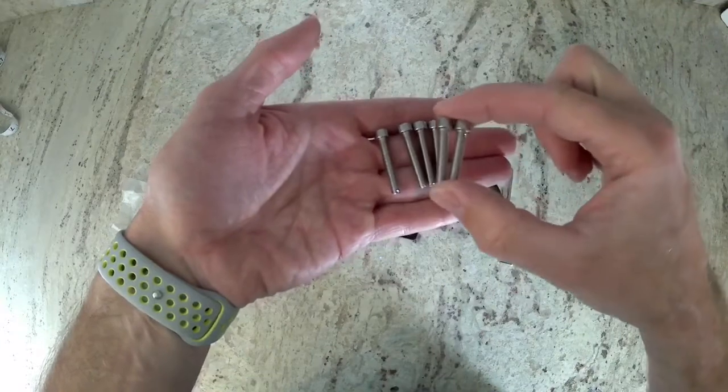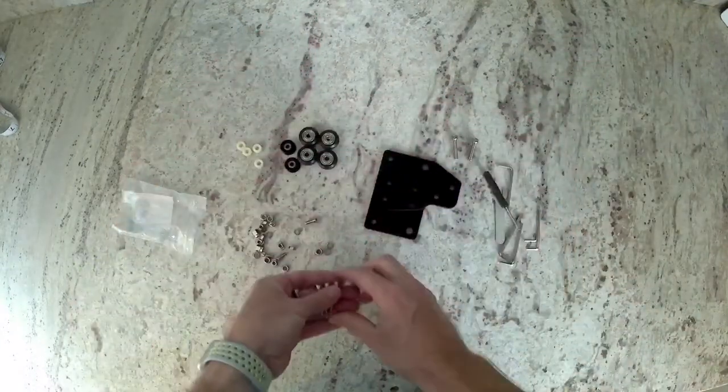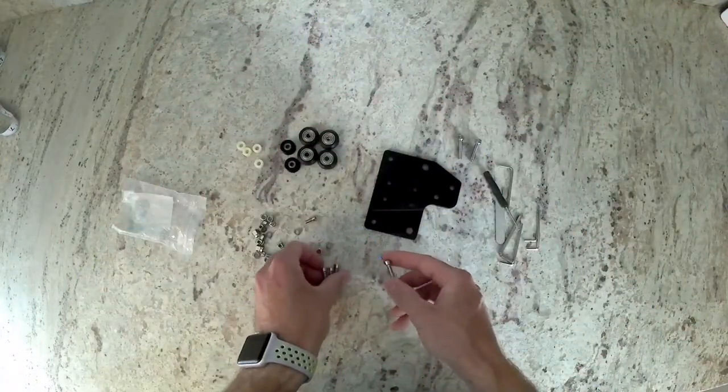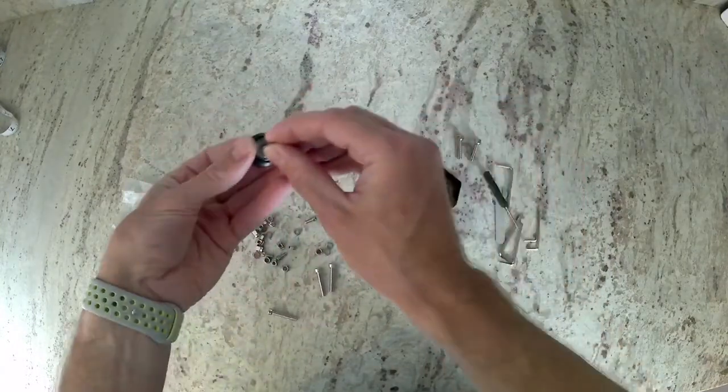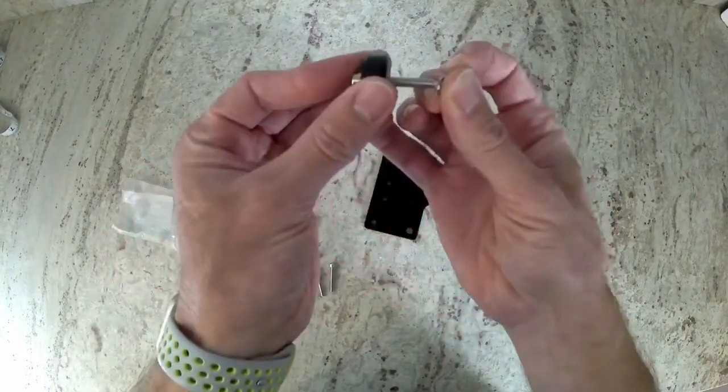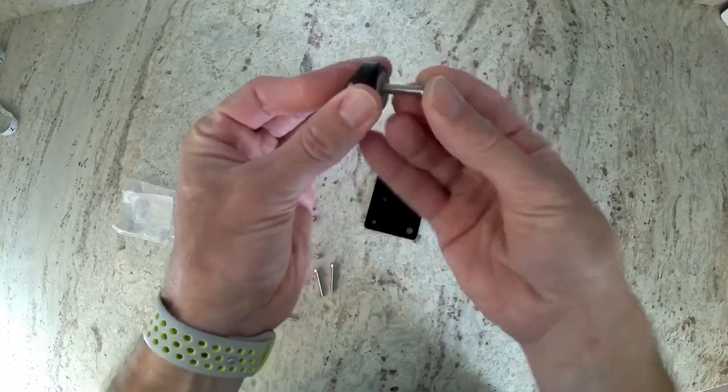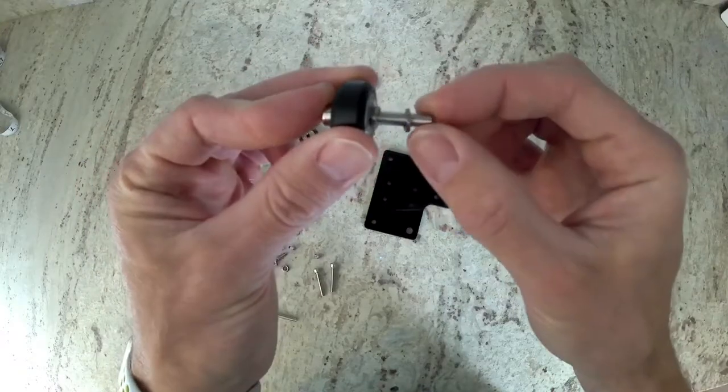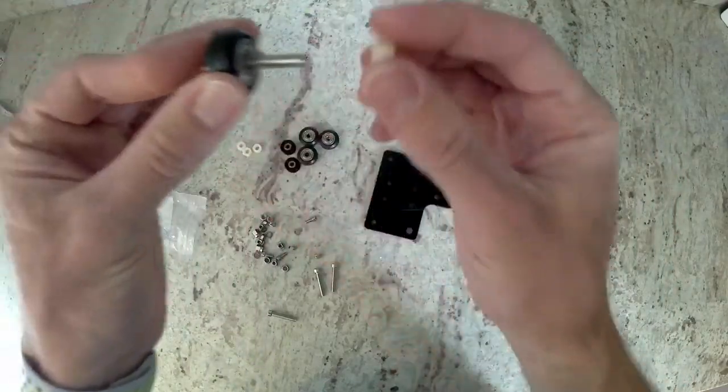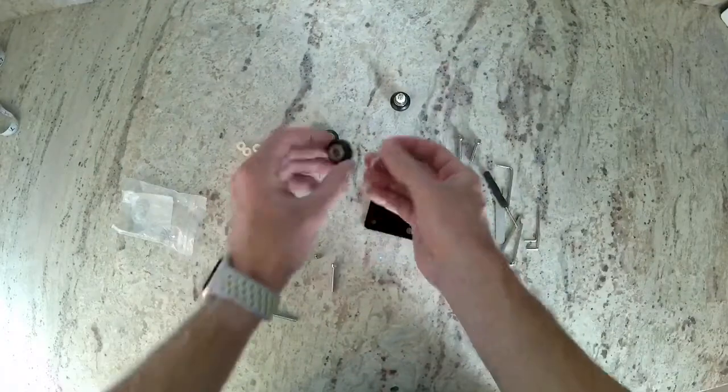We're going to use the long ones right now, and we're going to use these to build the Delrin Idlers, just as we have in the previous videos. So go ahead and put an idler on, two of your lock washers, then a nylon spacer. Repeat this once.